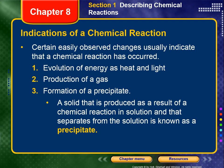Now let's move into the indications that a chemical reaction has taken place. Certain easily observed changes usually indicate that a chemical reaction has occurred. Number one: the evolution of energy in the form of heat and/or light. Number two: the production of a gas, usually seen as bubbles. Number three: the formation of a precipitate. A precipitate is a solid that is produced as a result of a chemical reaction in solution and separates from the solution. Or lastly, a change in color.